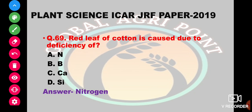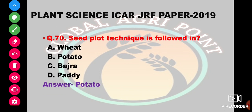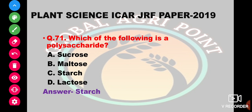Red leaf of cotton is caused due to deficiency of nitrogen, boron, calcium, or silicon. The answer is nitrogen. Seed plot technique is followed in wheat, potato, bajra, or paddy. The answer is potato.